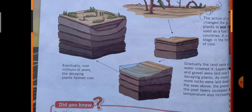The next step is the formation of coal. Gradually, the land sank with the passage of time due to floods and other natural disasters. Water covered it, and layers of mud and gravel were laid over the decaying plants. As more rocks were laid down, they increased the pressure on the peat layers.